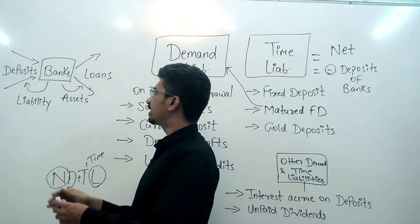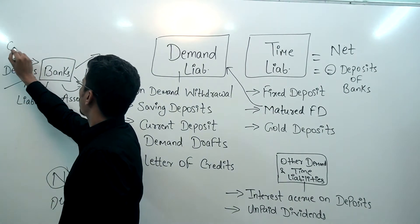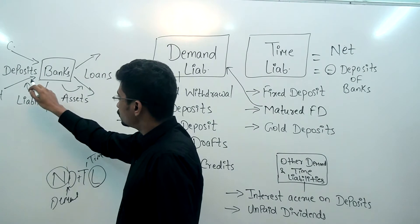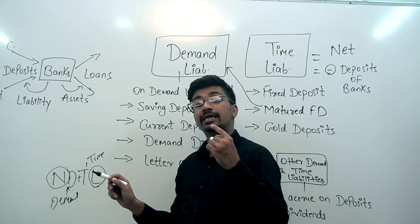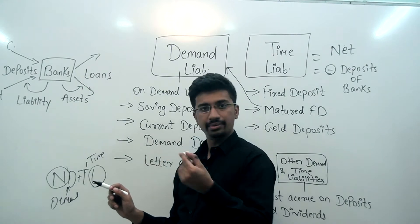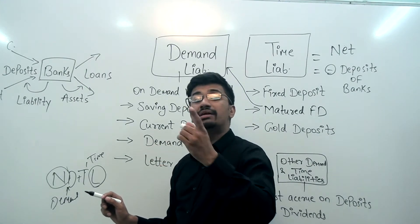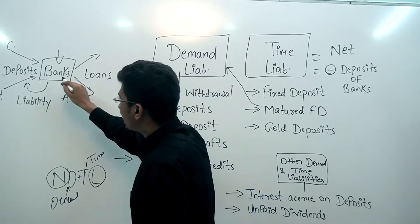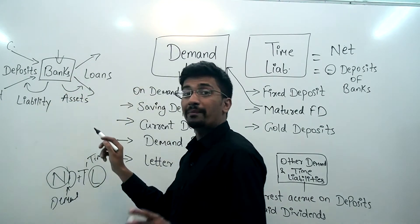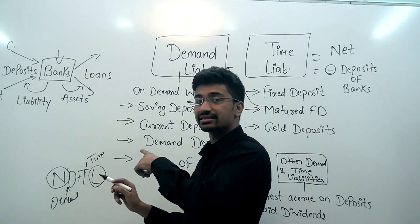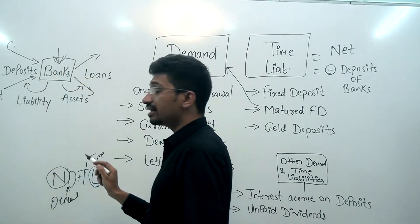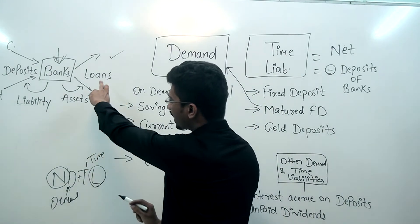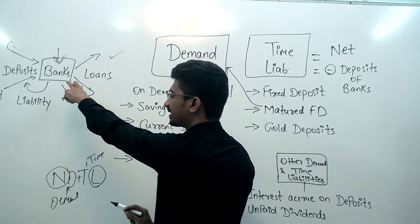Bank बहुत जगहों से deposits लेता है — like corporate houses, households, हमारे जैसे लोग। यह जो deposit है, यह depositors का asset है। हम कभी भी ले सकते हैं, यह हमारी चीज़ है। और यह liability किसकी है? Obviously bank की — bank को देना पड़ेगा। वहीं जब banks loans लेट out करती है, तो वो पैसा bank का asset है, और वो loan जिसको मिला है उसकी liability है।